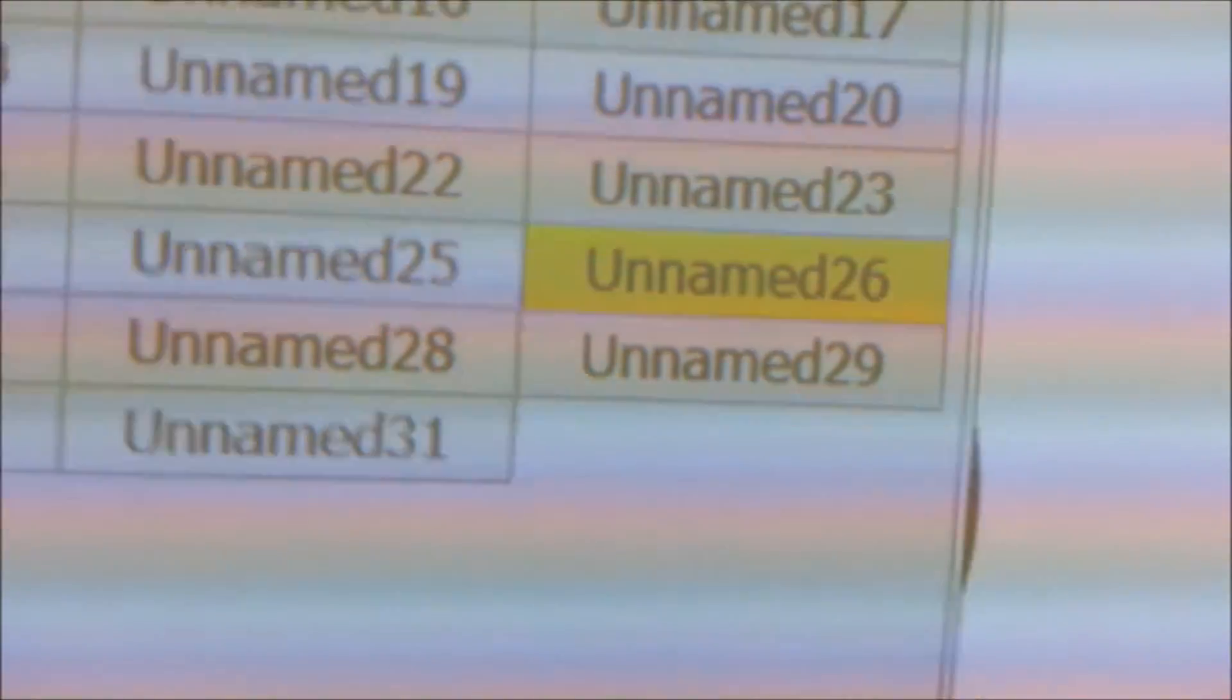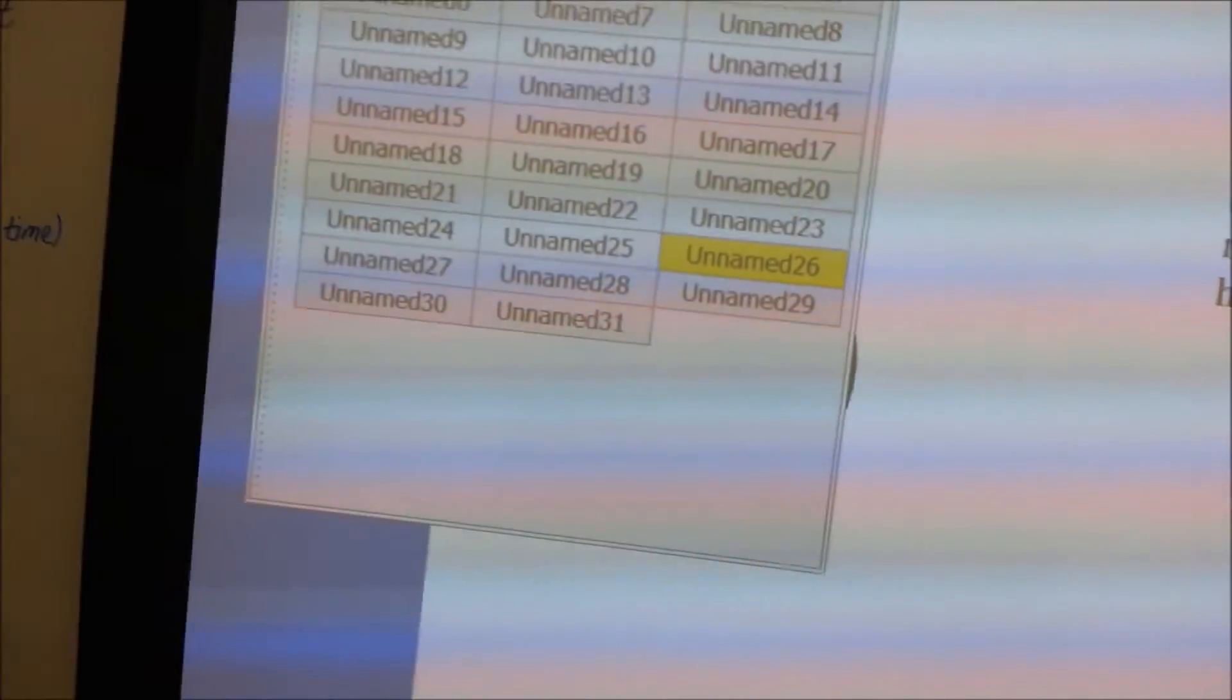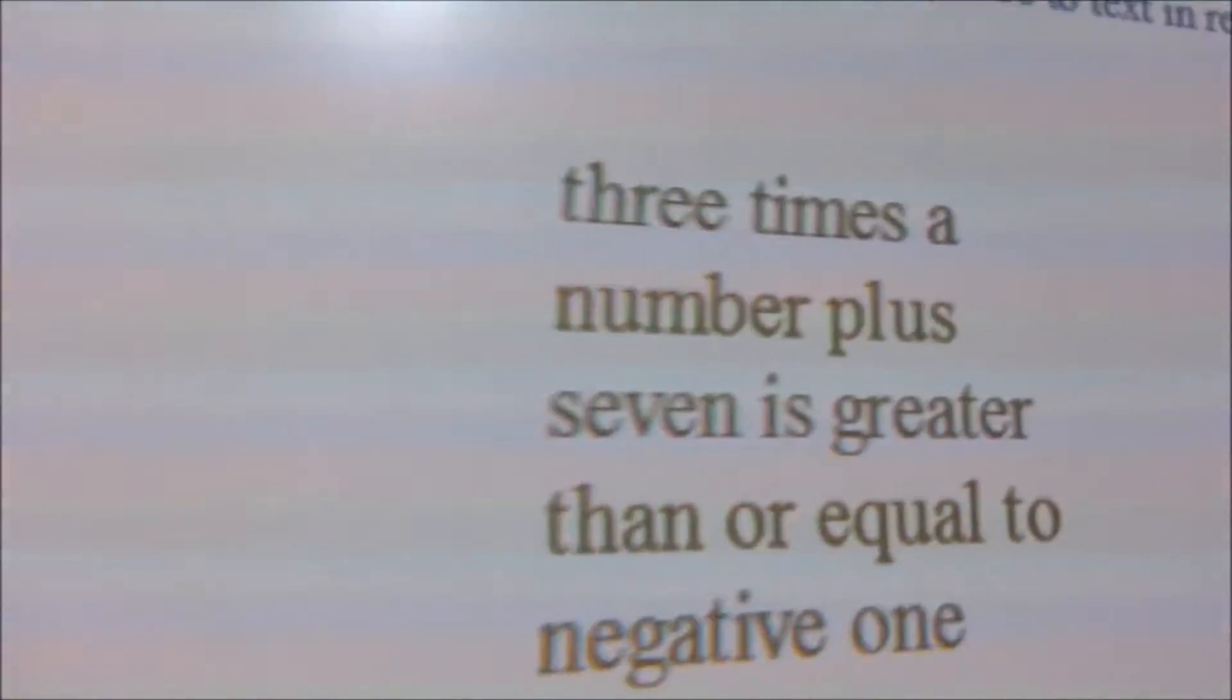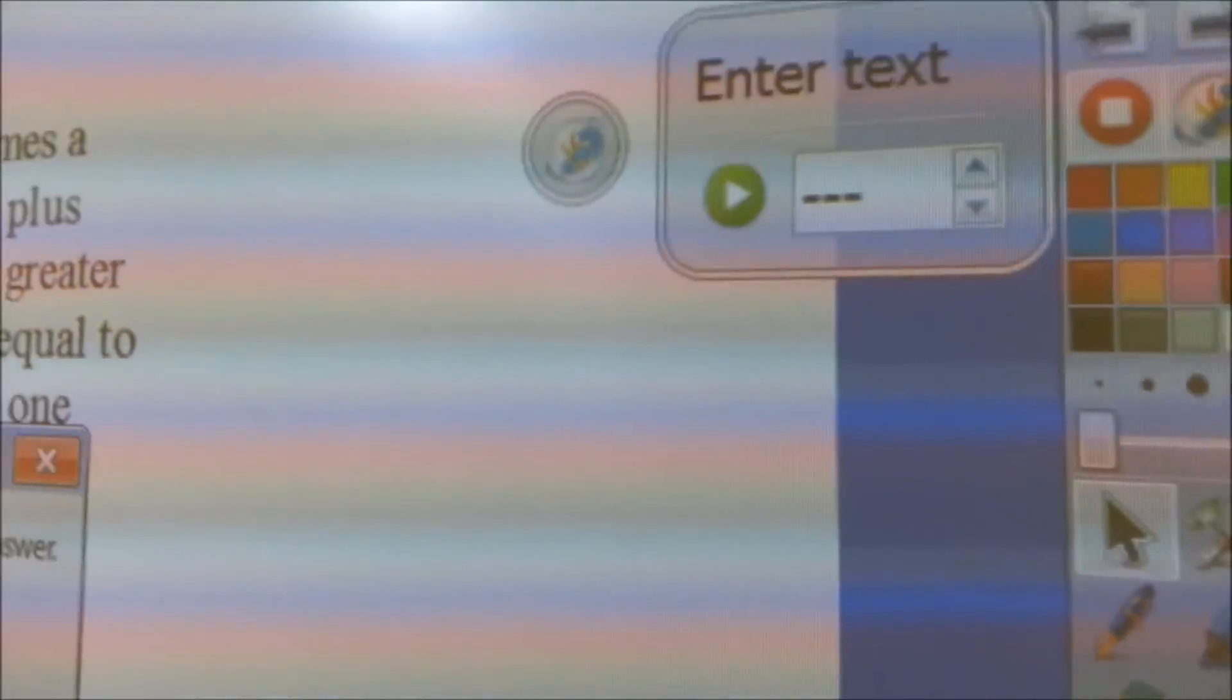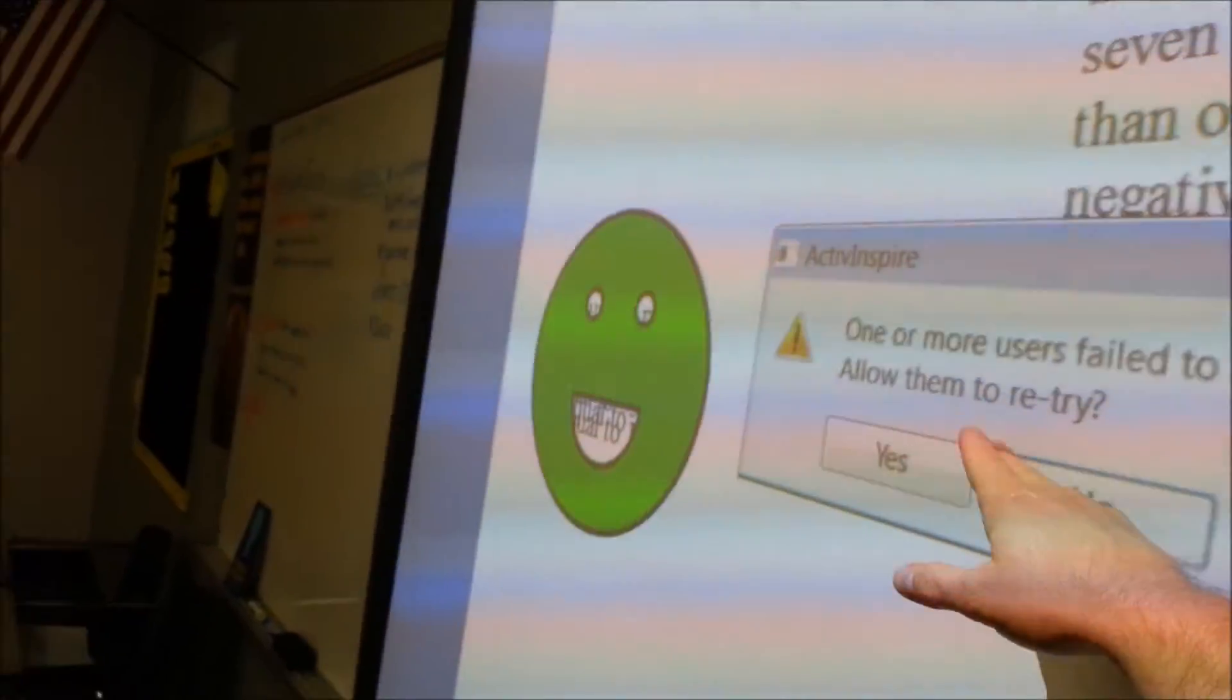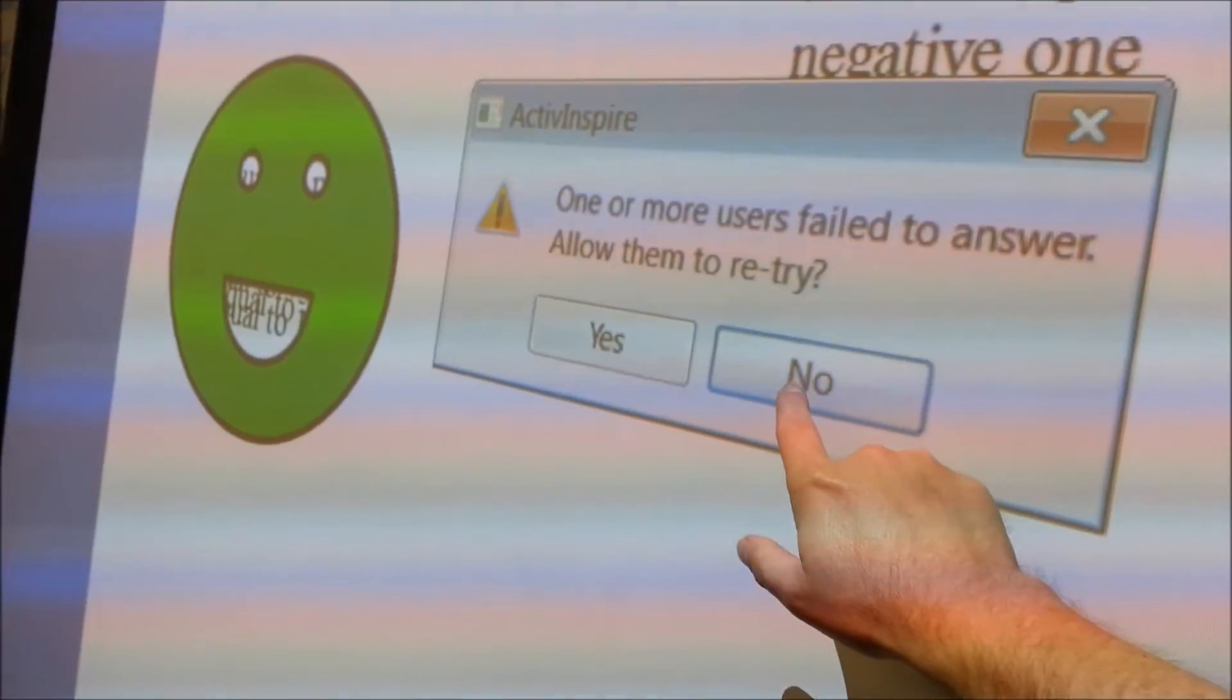You will notice that at the beginning of the video we said that it was number 26. It will turn yellow, and then every time that you are finished you can either set the timer here or you can just stop polling. When you stop polling, it'll tell you that there were other people that didn't respond.